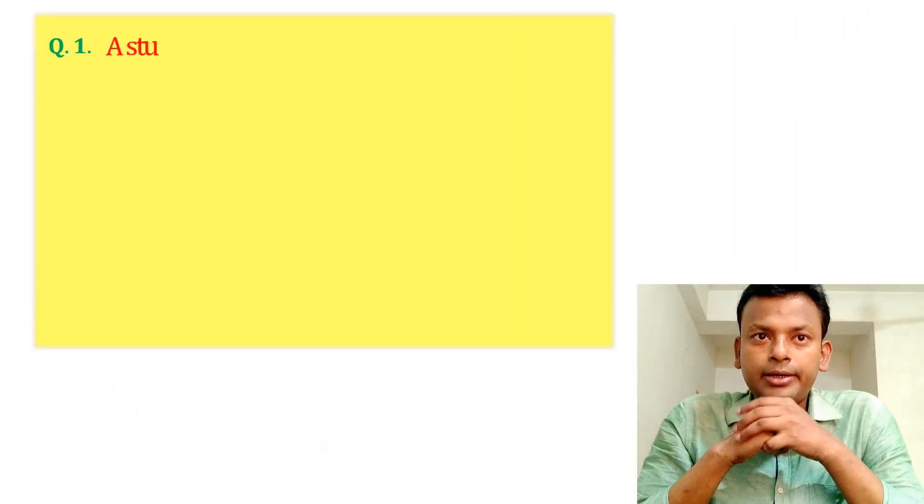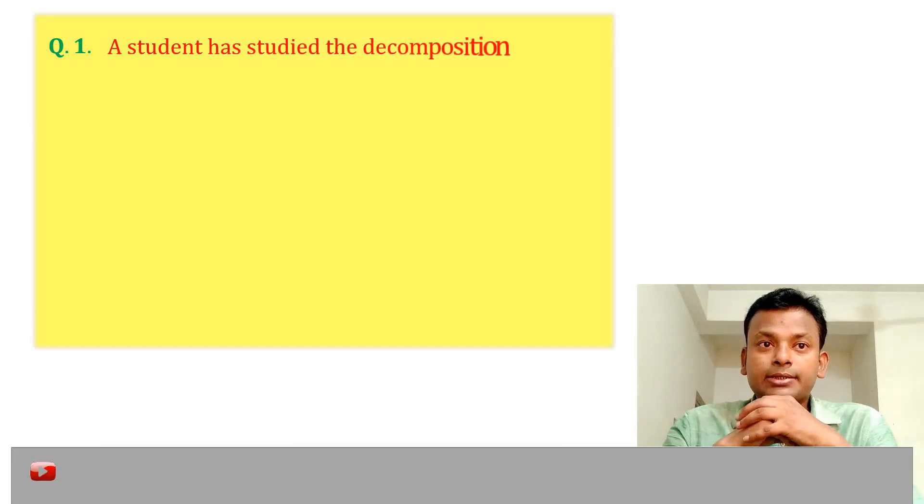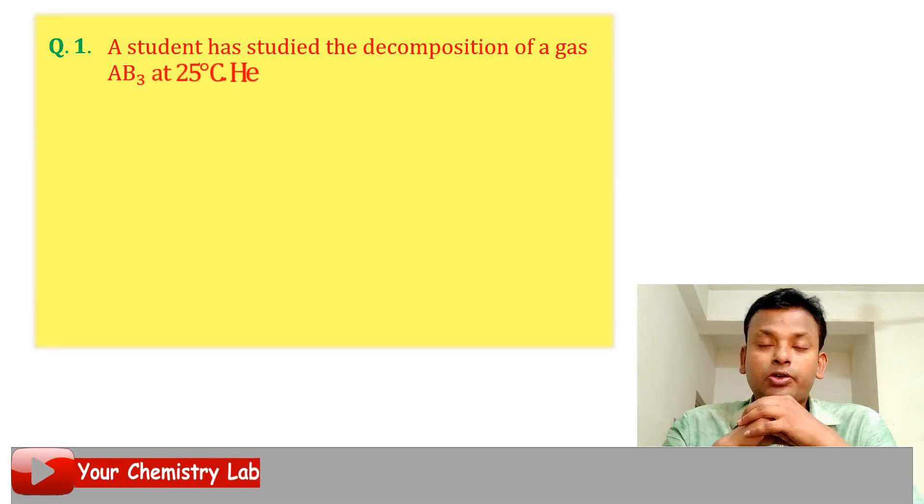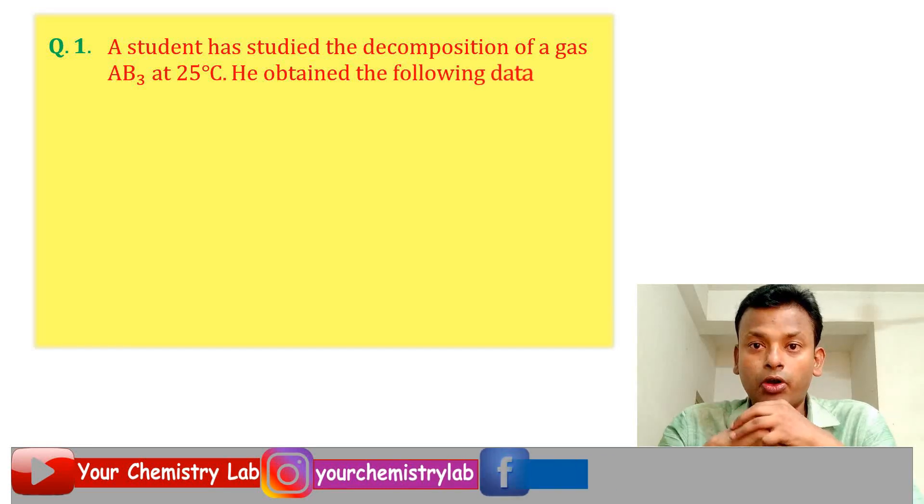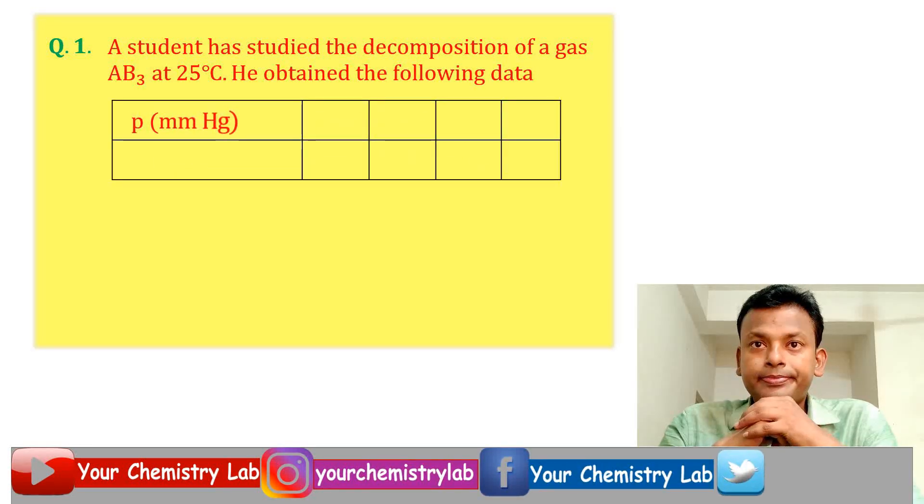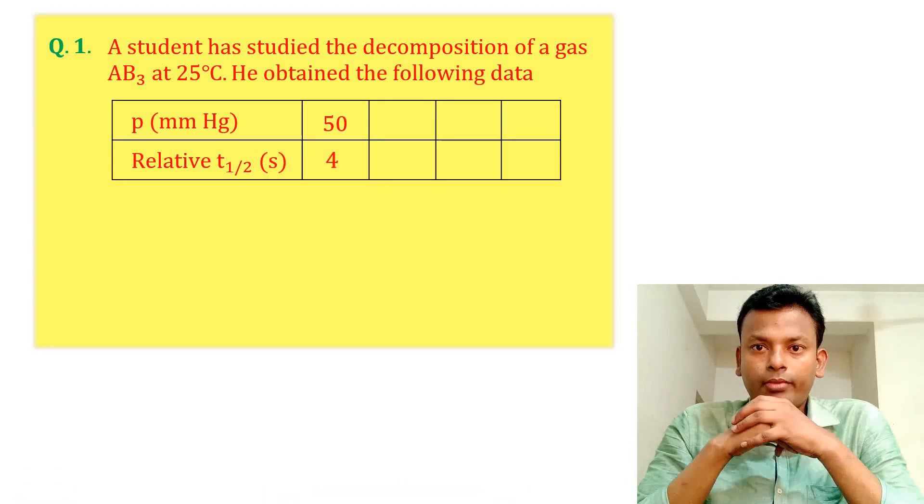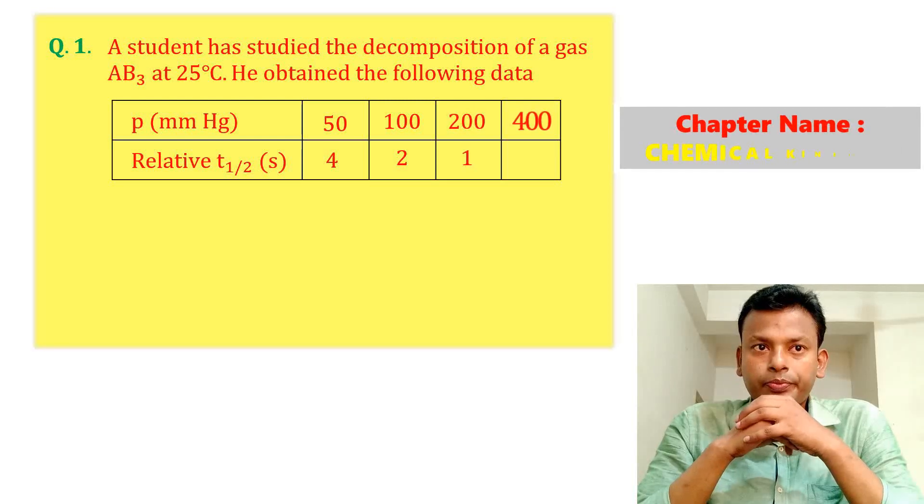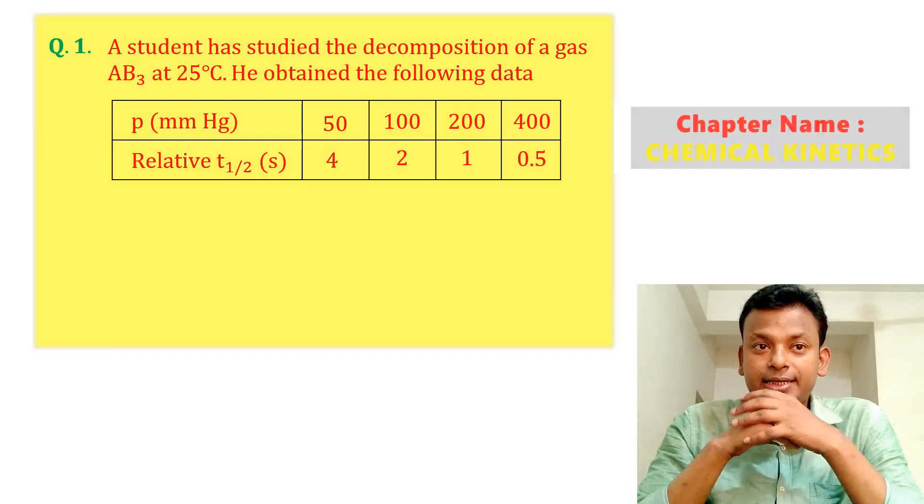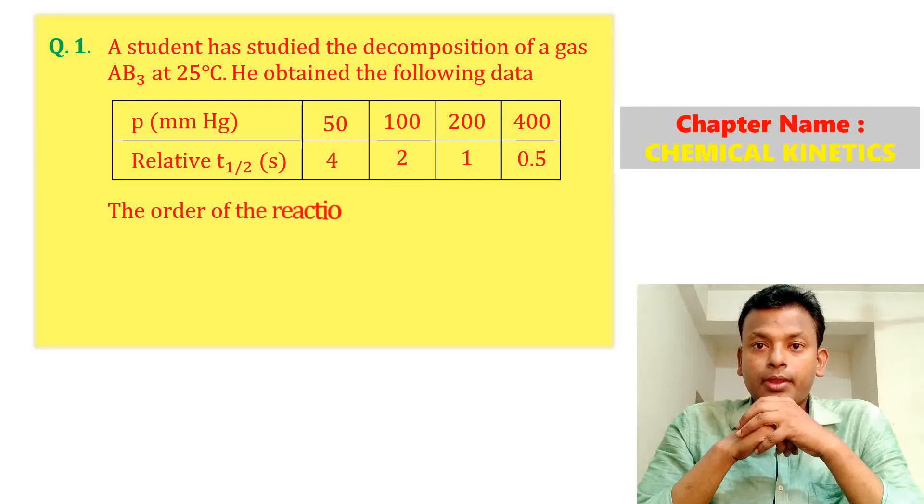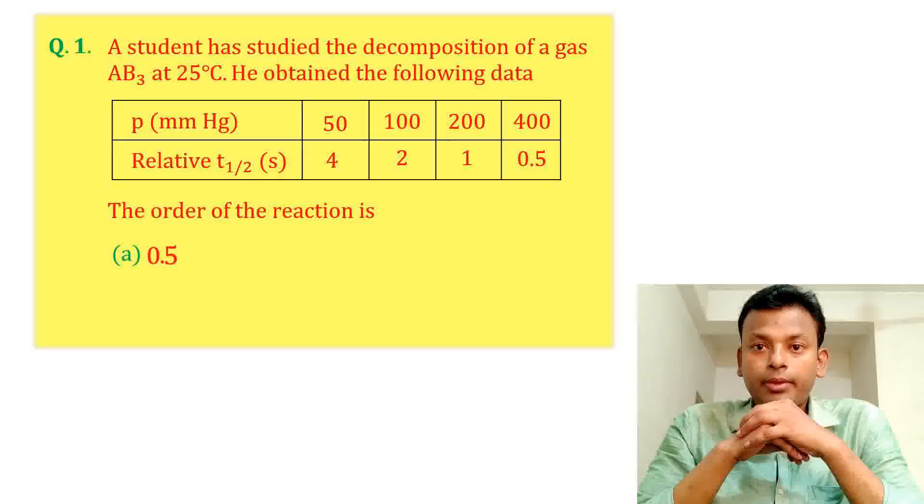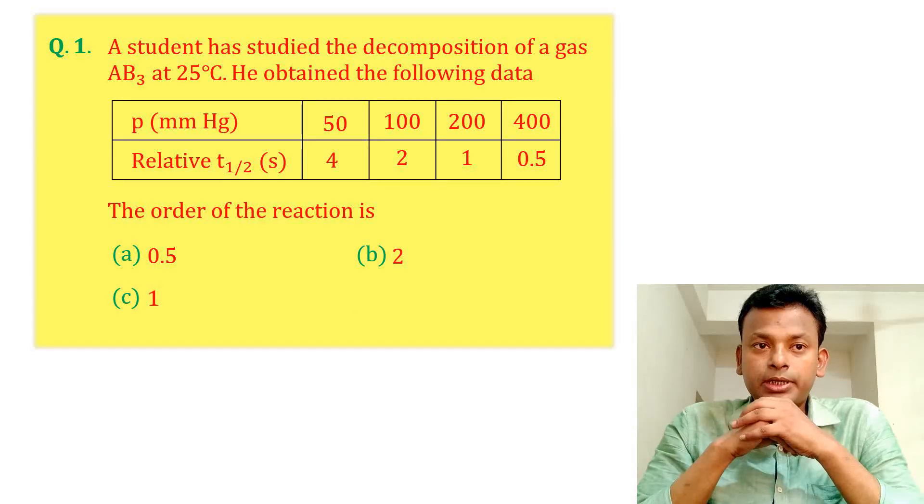Question one: A student has studied the decomposition of a gas AB3 at 25 degree centigrade. He obtained the following data. The order of reaction is - option A, option B, option C, and option D.